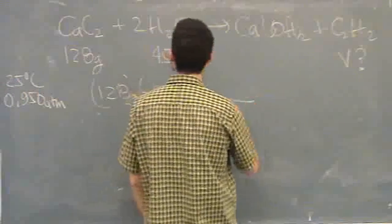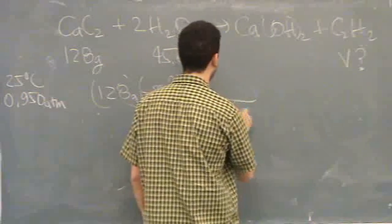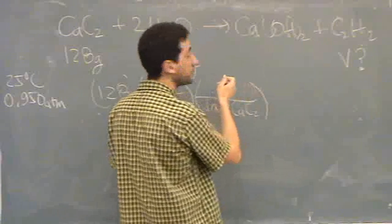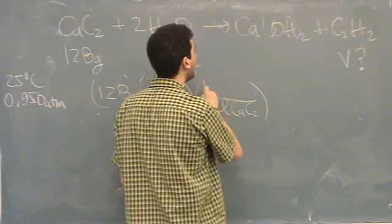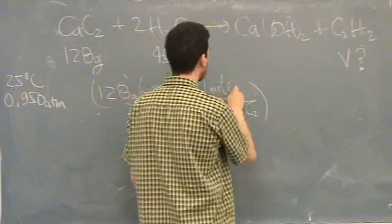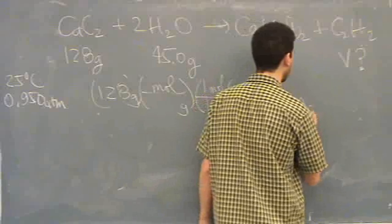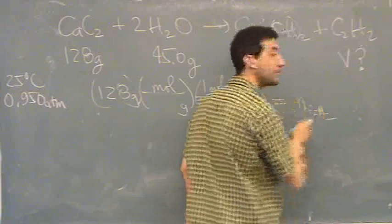And then you would say there's one mole of calcium carbide for every, if this is balanced right, I'm assuming it's balanced correctly, one mole of C2H2. This gives you moles of acetylene, C2H2. Is that okay?